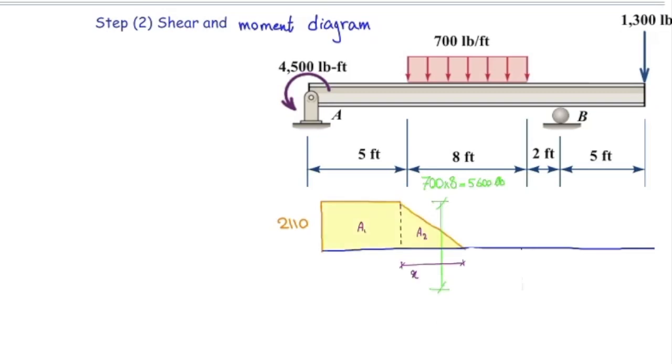So at the other end, I would get to this value, which is 2,110 minus 5,600, which is negative 3,490 pounds.